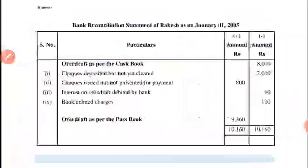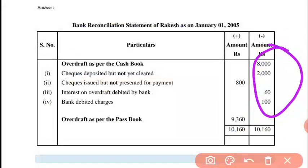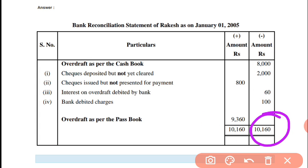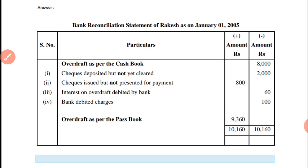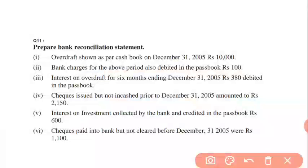Sum karne par aayega: overdraft as per passbook. Overdraft as per cashbook tha — minus ka sara yahan rahega. Overdraft as per passbook: 9,360 — kyunki minus ki side zyada hogi. Debit ki taraf 10,160 hai, 800 minus kar diye — it will be 9,360. Samajh aa gaya? Aage badhte hain.